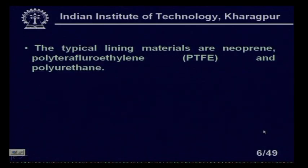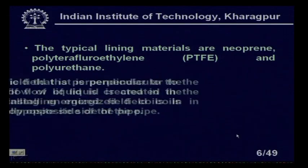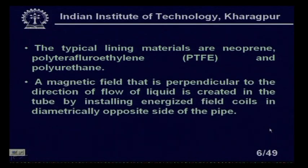The typical lining materials are neoprene, polytetrafluoroethylene (PTFE), and polyurethane. The magnetic field perpendicular to the direction of flow is created by installing energized field coils on diametrically opposite sides of the pipe. Two energized field coils are placed on diametrically opposite sides to produce the required magnetic field.